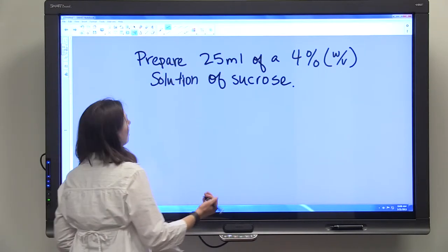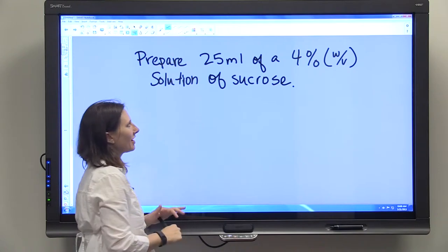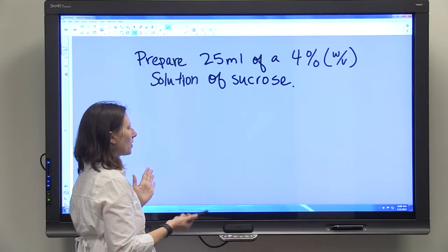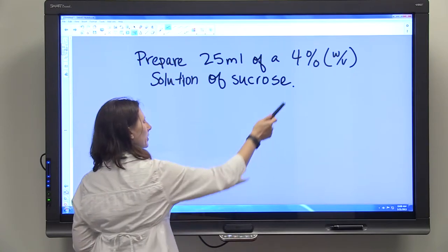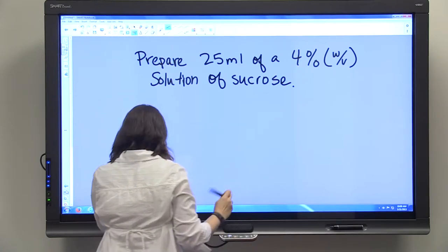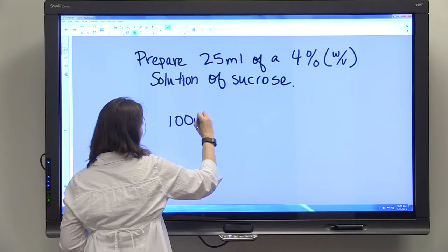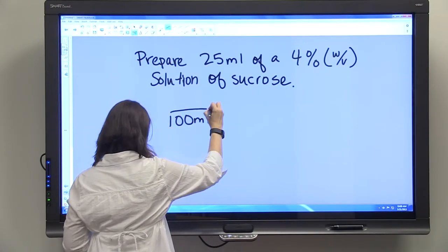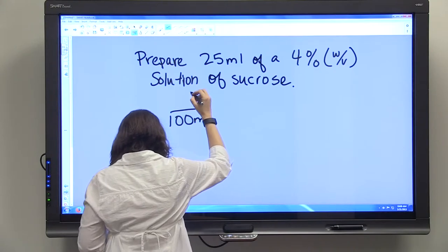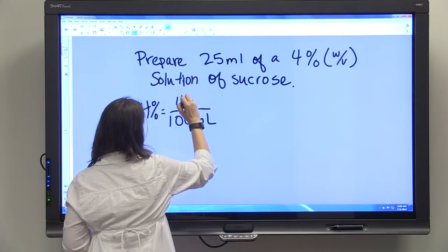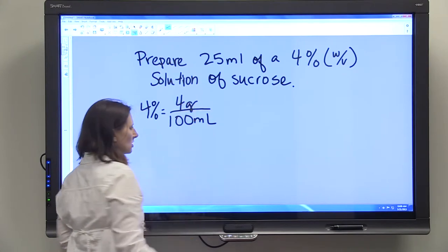Let's go through a quick example to show you how this will help. If you're asked to prepare 25 mL of a 4% weight-to-volume solution of sucrose, you want to set up your concentration, this 4%, in terms of 100 mL. So you'll have 100 mL and you'll have that 4% equals 4 grams out of 100 mL.